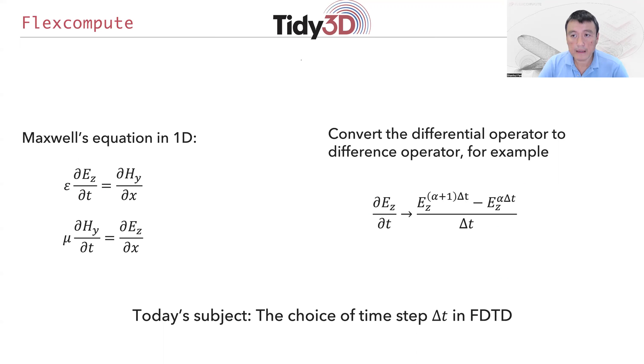In the finite difference time domain method, we take the Maxwell equations—for example, a Maxwell equation in one dimension—and convert the differential operator to difference operator. For example, to take a temporal derivative of the Ez field, we take the Ez field at two adjacent time steps, subtract them, and divide by the time step.